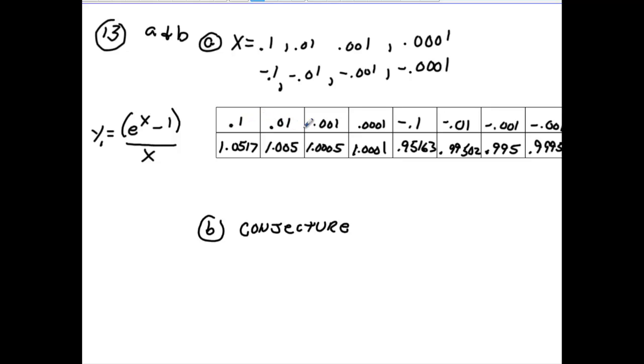And you notice that here, as you're getting closer and closer from the left side, you're going to 1. As you're getting closer and closer to the right side, you're going to 1. So the conjecture is 1. So the limit of this function, as x approaches 0, is going to be 1.